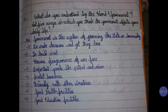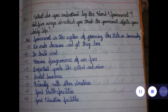Government is the system of governing the state or community — to make decisions and get things done. It builds roads, runs various welfare programs, and controls important goods like petrol and onions. It protects boundaries, maintains friendly relations with other countries, and provides good health and education facilities. Thank you.